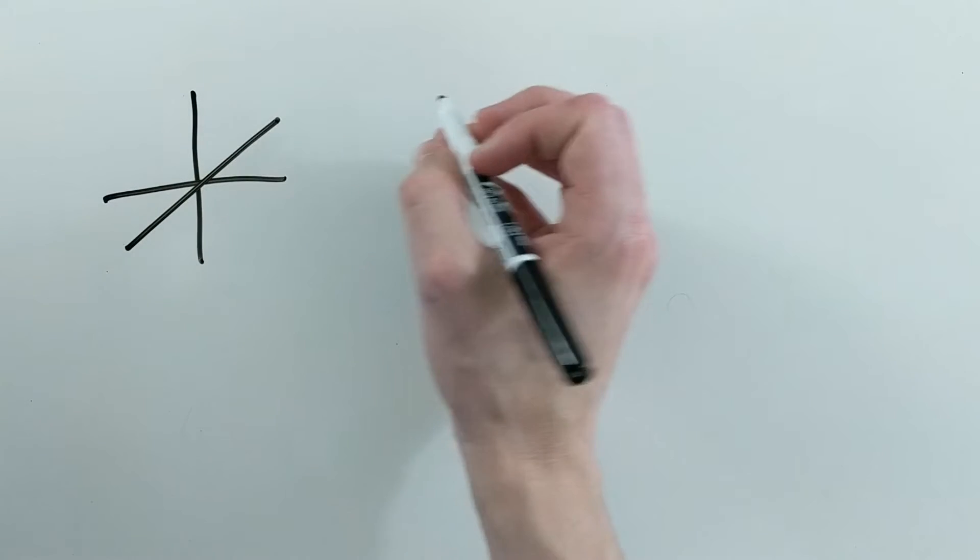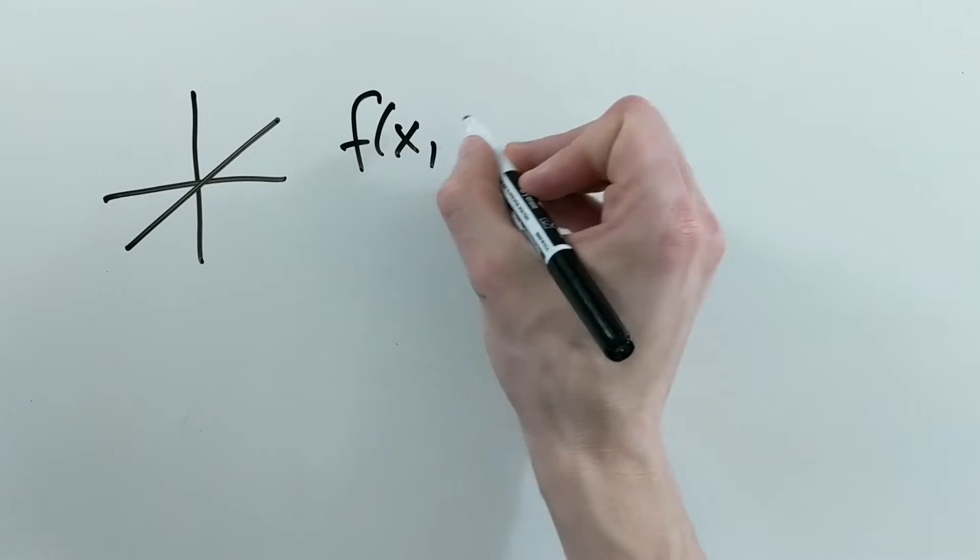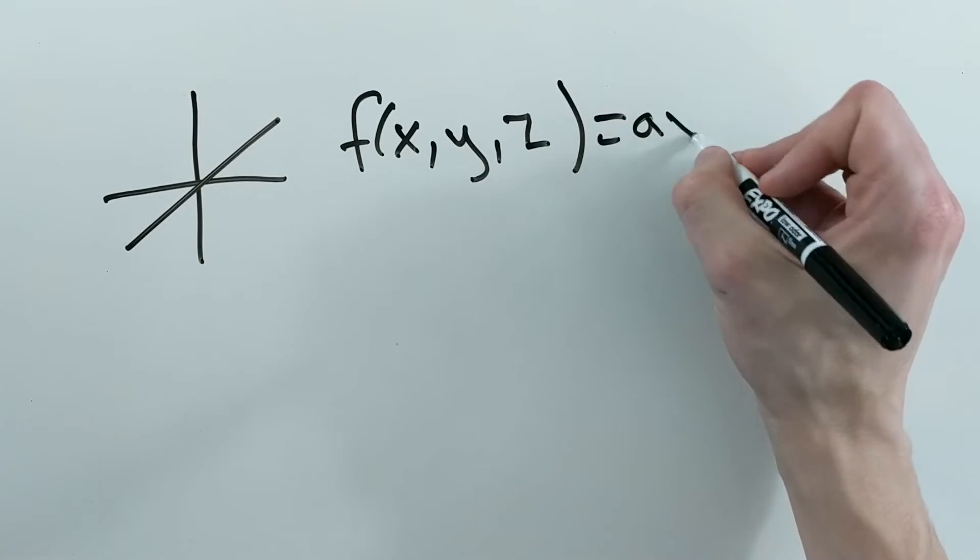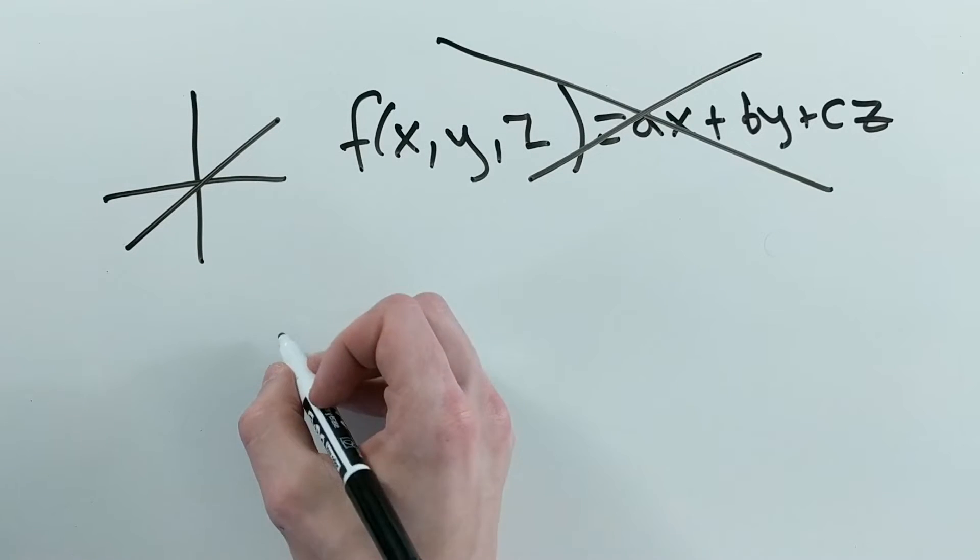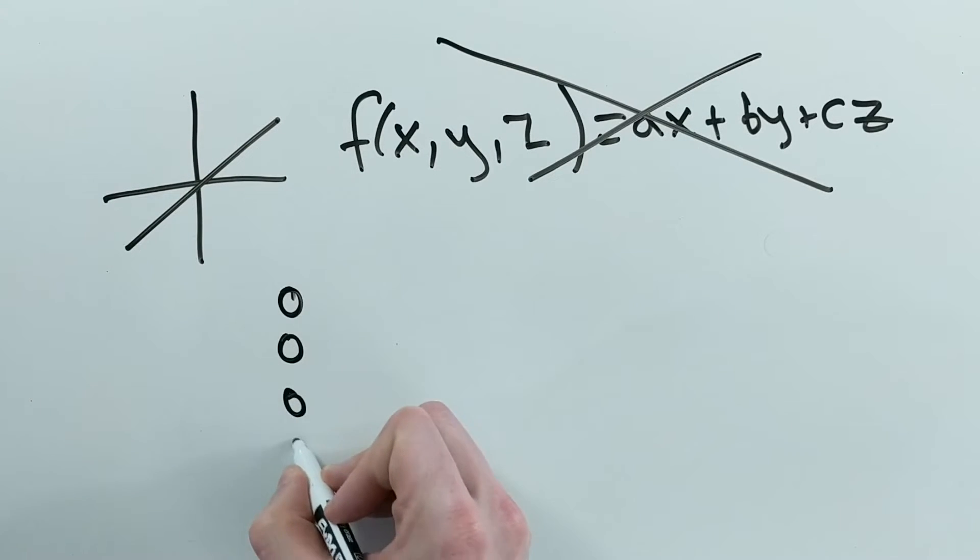We don't usually want to use a linear activation function because with a linear activation function, regardless of how many layers or neurons you use, the final function will always be a linear combination of the inputs.